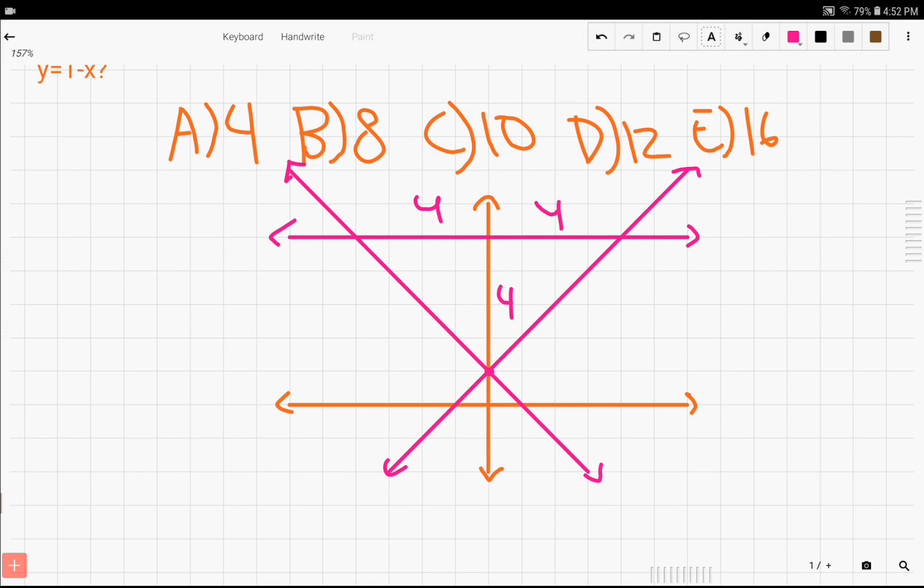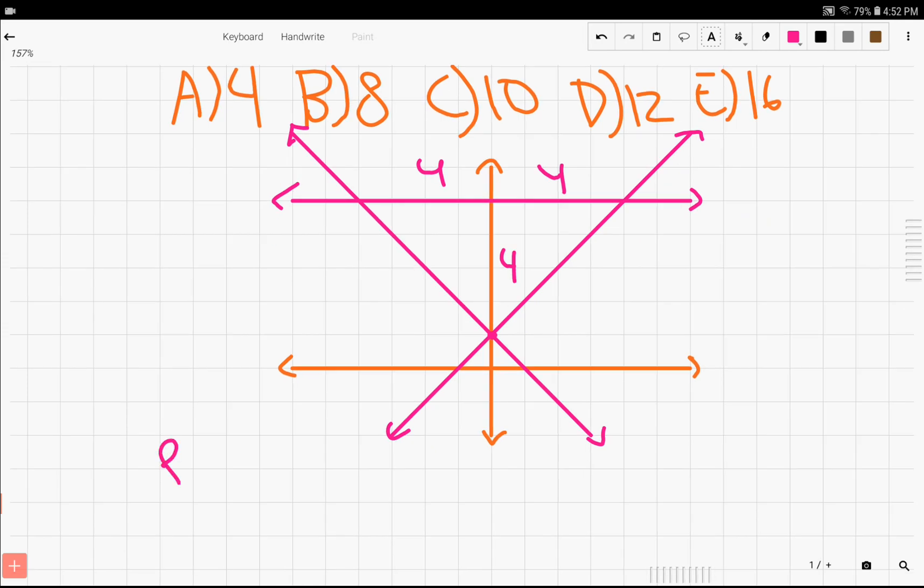So, calculating the area is really simple. 8 times 4 over 2 is 16, which is our answer.